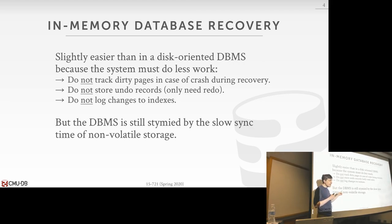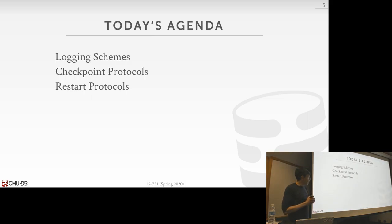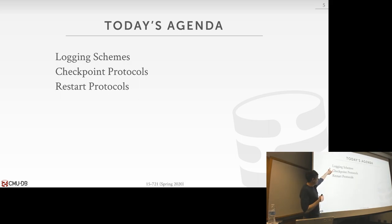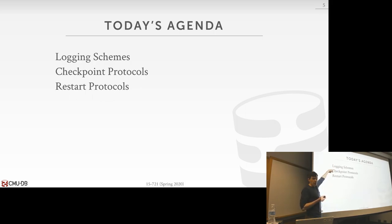We still have to deal with the fact that logging will be slow, so we still want to take advantage of optimizations from disk-oriented systems: group commit, batching things, doing speculative lock releases — all those still apply here even in memory. Logging and checkpoints are what you need to guarantee durability. Logging is what you absolutely have to have; checkpoints are an optimization to make restart go faster; and speculative reads avoid having to replay as much.